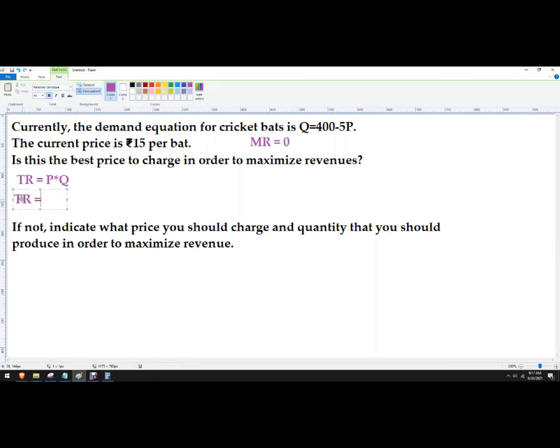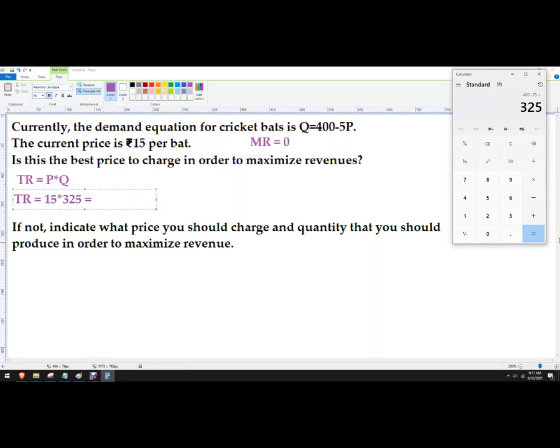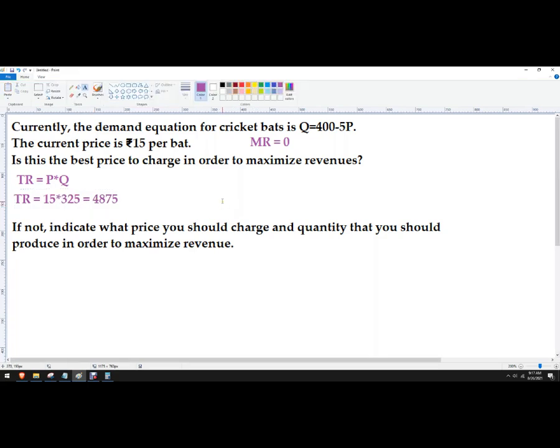So we're earning 15 rupees times the quantity of 325. So total revenue equals 15 times 325, which gives us 4,875 rupees. So that's what our current total revenue is. So we're going to see if we can beat that.